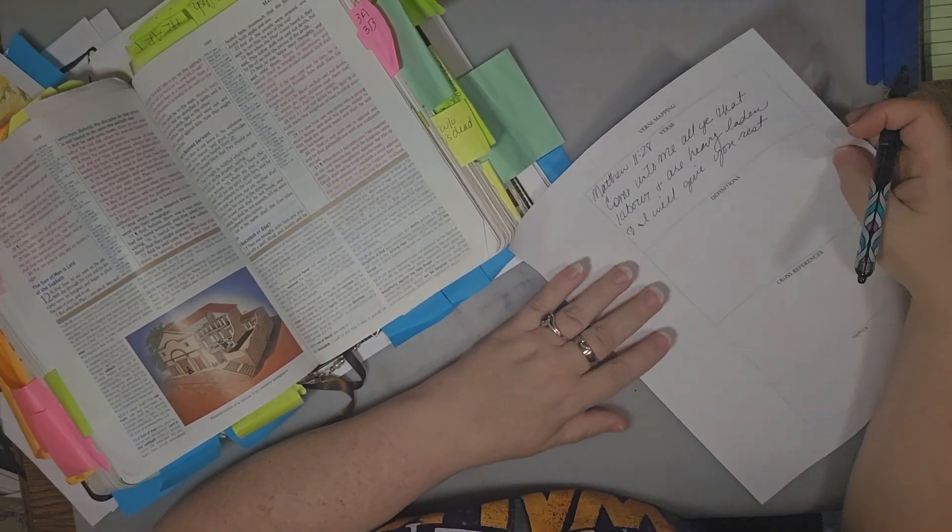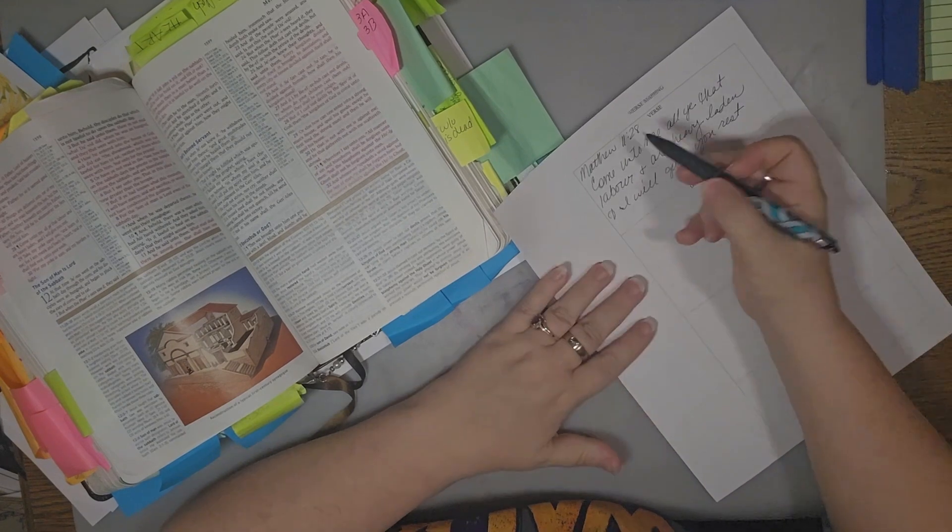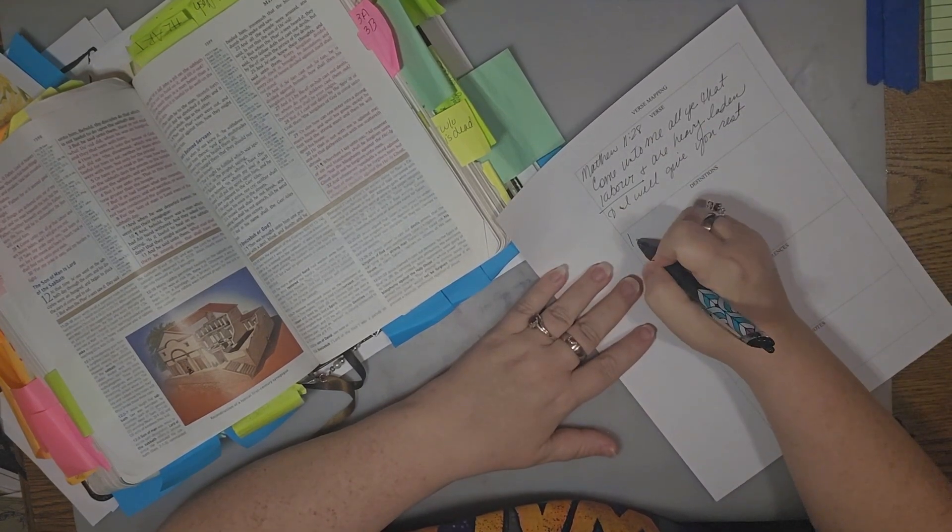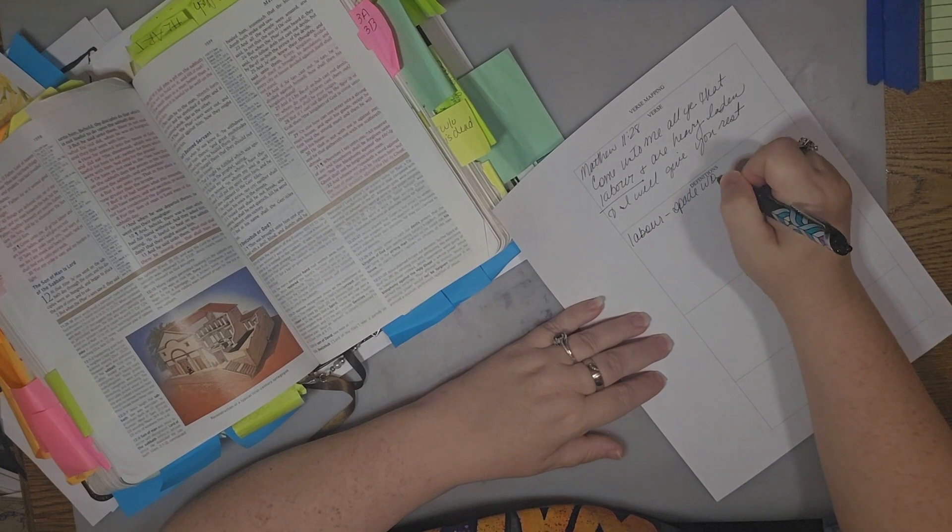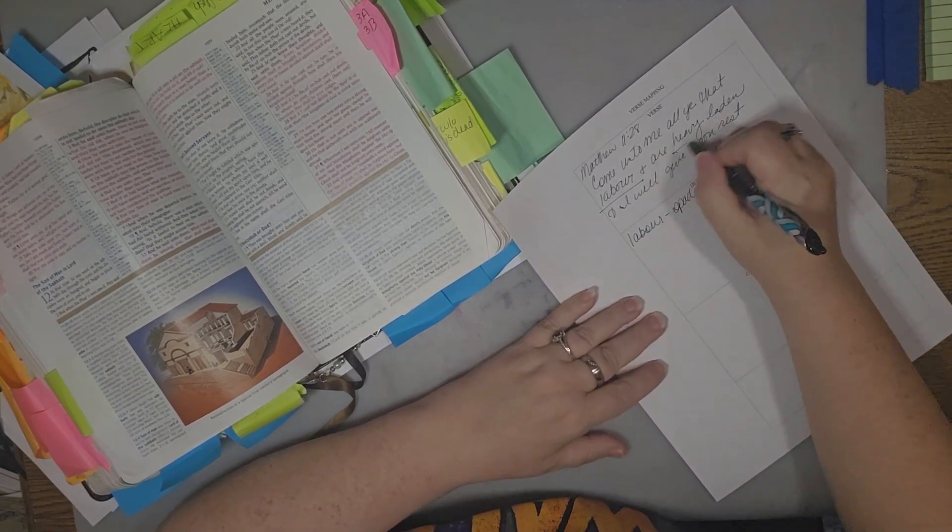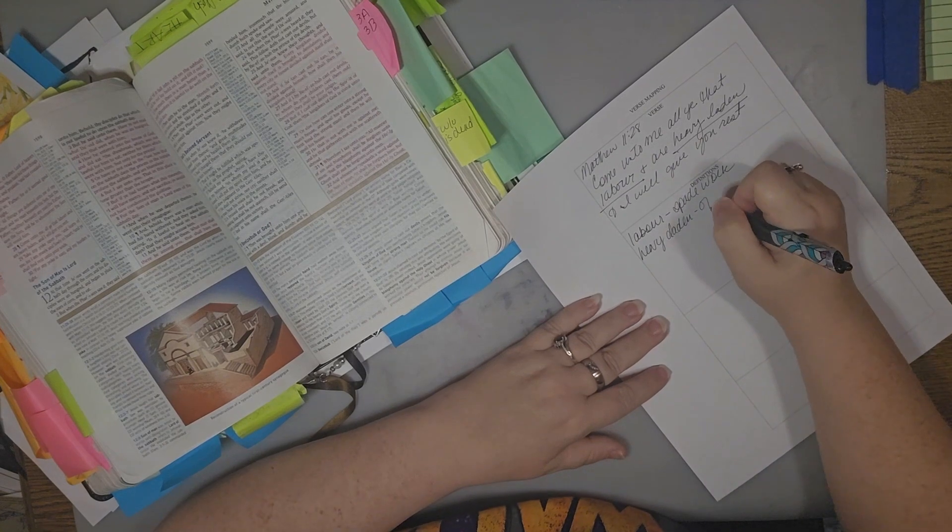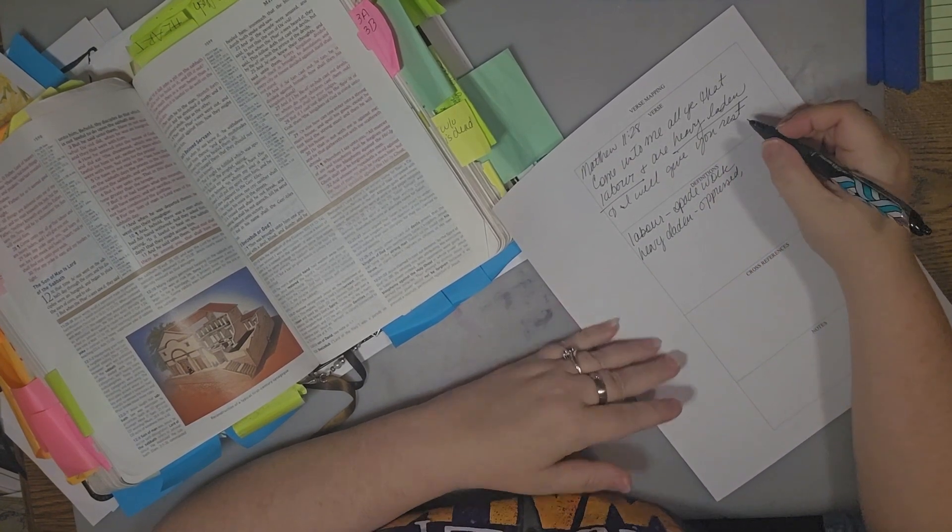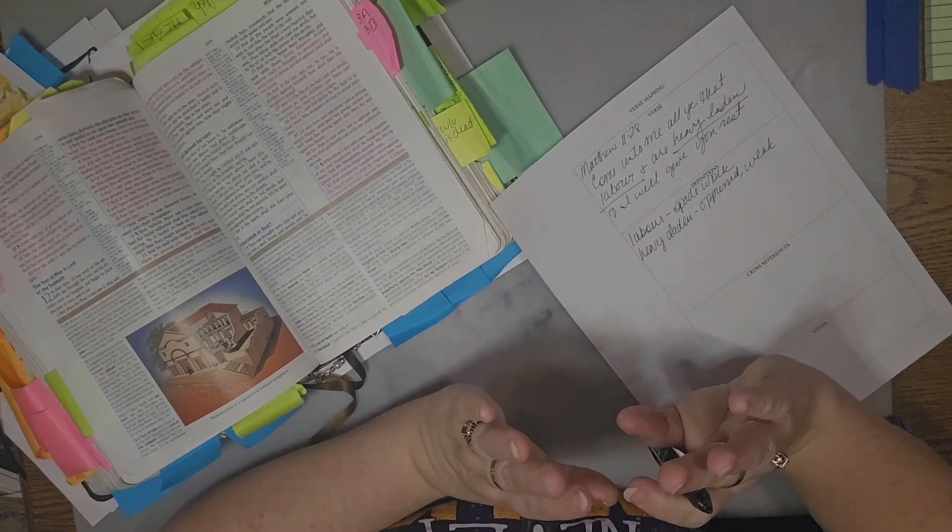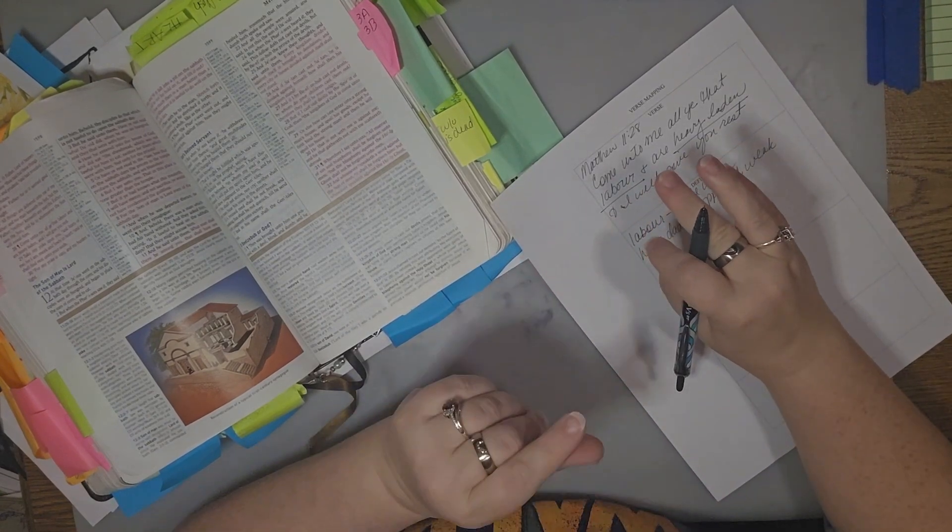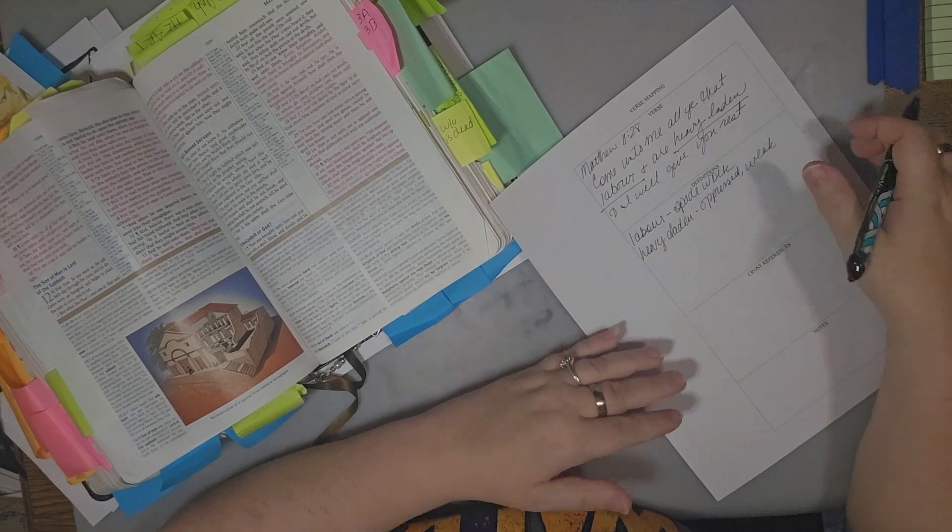It says, come unto me, all ye that labor. Now, some of us know about laboring, and we just talked about spade work. So right here, labor - that's my spade work. This is when I get in there and get going and break that crust up. That's my spade work. And it says, are heavy laden. Heavy laden could also mean oppressed, not just spiritual oppression but physical oppression. Heavy laden could mean you could be weak, where you feel like you got all the weight of the world on your shoulders.